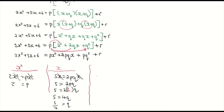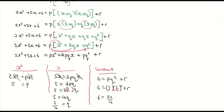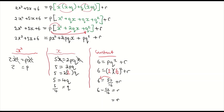Now finding the constant: 6 = pq² + r. Substituting p = 2 and q = 5/4: 6 = 2 times (5/4)², which is 2 times 25/16 = 50/16. So 6 − 50/16 = r, giving r = 23/8. Those are our three values: p = 2, q = 5/4, and r = 23/8.